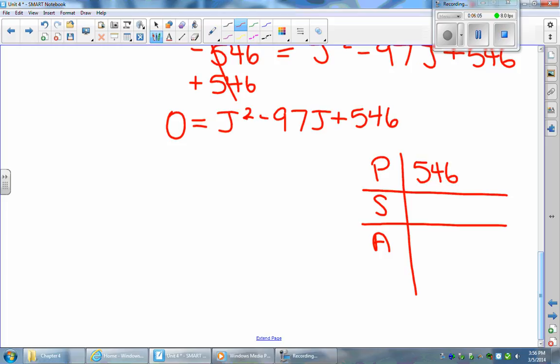So I have 546 as my product and negative 97 as my sum. Now I've worked it out so that negative 6 times negative 91 is equal to positive 546, and negative 6 plus negative 91 adds to negative 97. So negative 6 and negative 91 are my solutions.